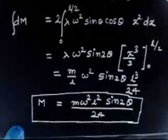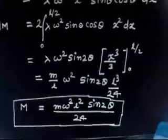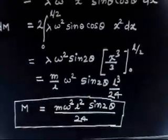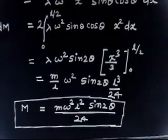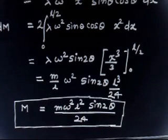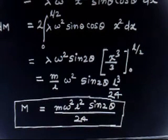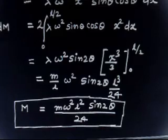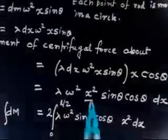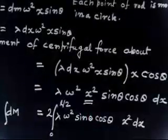To summarize: we first identify the centrifugal force on a small mass dm, then take the moment of that small force about point C, and then integrate. We must integrate because the centrifugal moment is a function of x, varying along the rod. This is a straightforward problem.